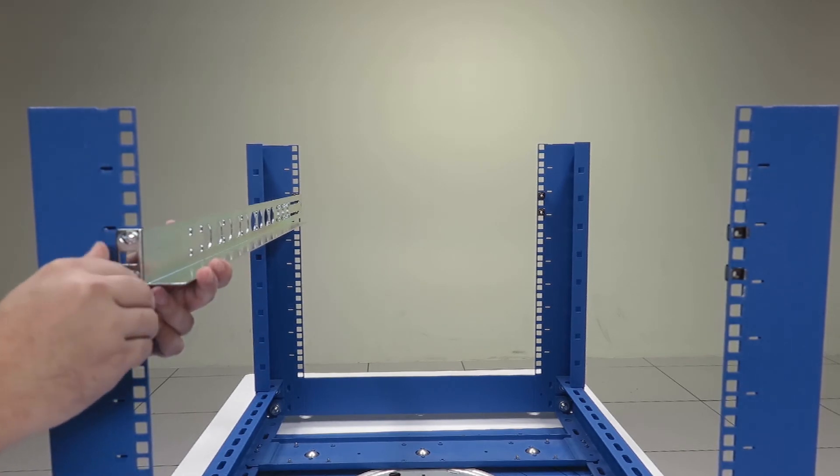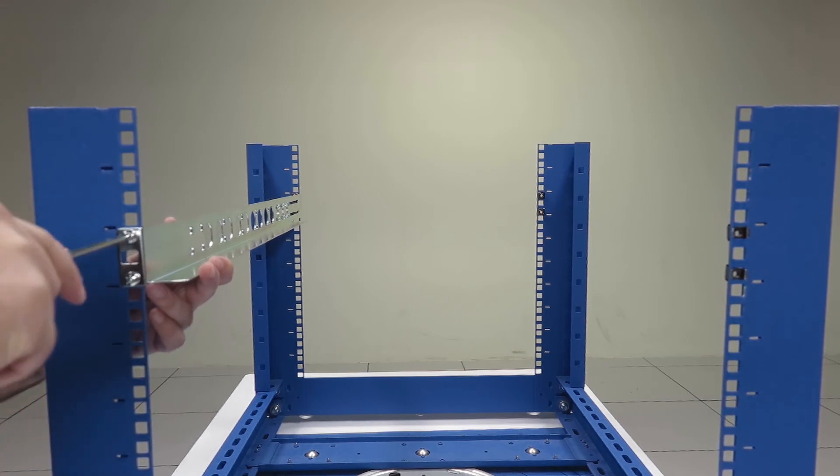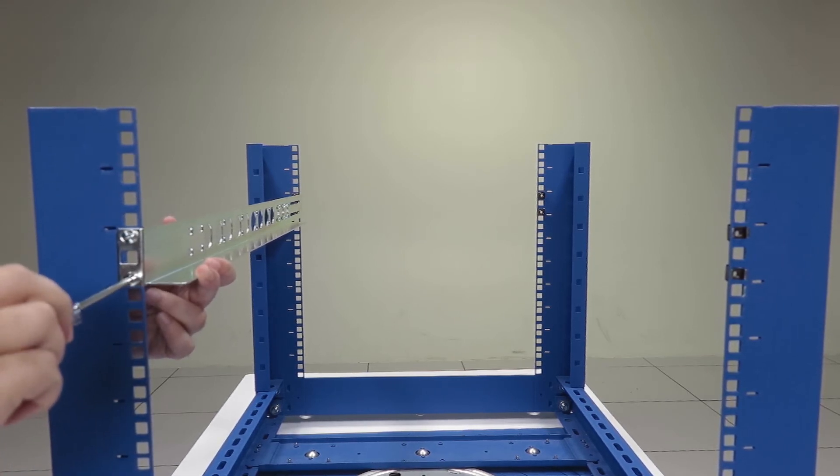Afterwards, you can tighten each screw further using your Phillips head screwdriver. This process is repeated the same way for each upright. Remember that there need to be four screws per rail.